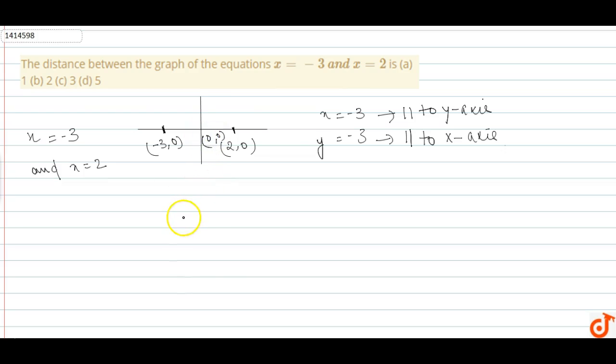We know that origin is 0,0. So basically negative x-axis distance from origin to minus 3 is equal to 3 units.